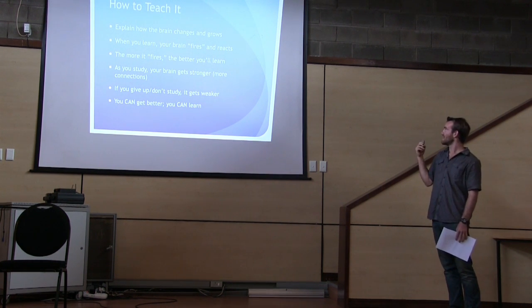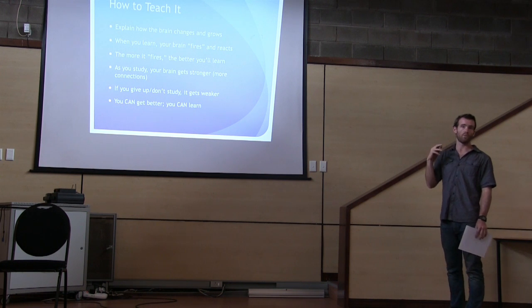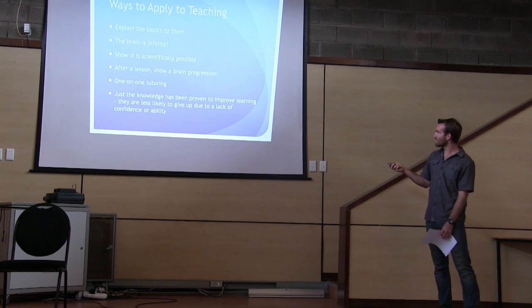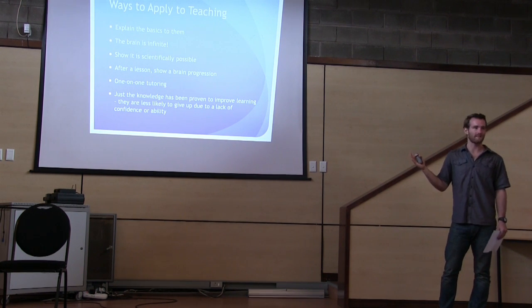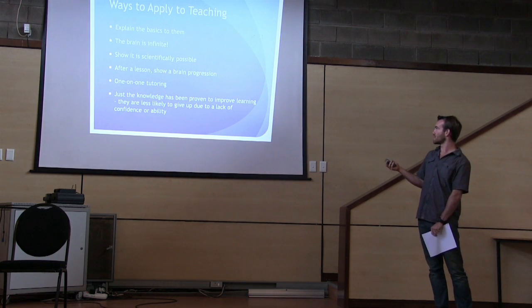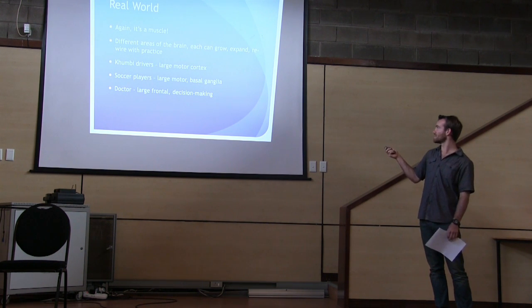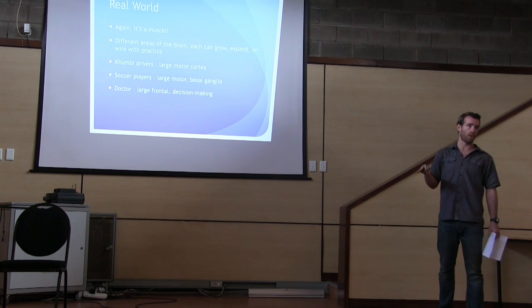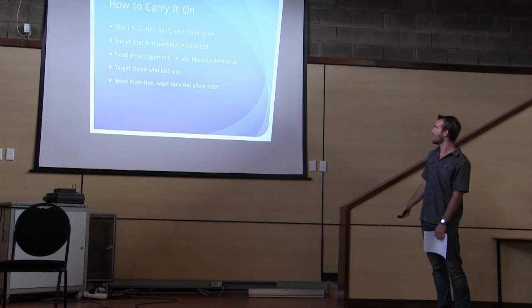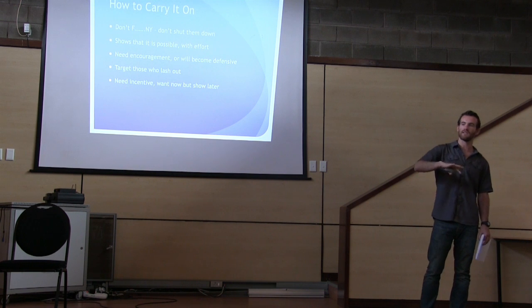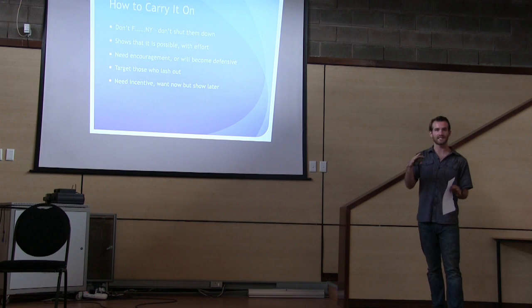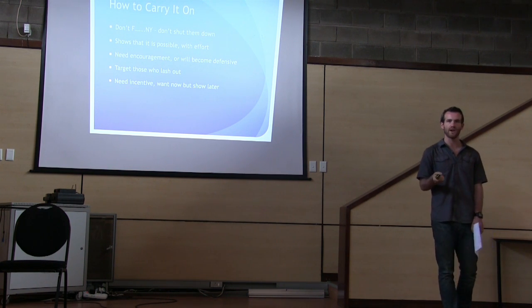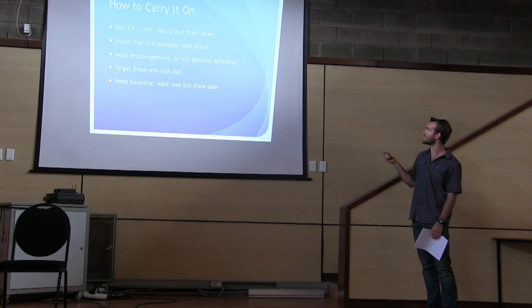How to teach this: tell them that when they learn, something fires in their brain, and the more they do it, the more it will grow — they can scientifically learn. Tell them they can do this, they can learn, it's not impossible. Show them in a lesson that the brain is infinite and has a never-ending ability to learn. You can give them one-on-one tutoring. Use real-world examples — cab drivers have a large motor cortex because they practice over and over. You can apply it to actual school skills. A big thing that has been shown to help is not failing kids: on specific assignments, they don't get A, B, C, or F — they get 'NY,' meaning 'not yet.' That shows there is potential; keep trying. Failure makes them give up and lash out. Show them that it is actually physically possible for them to learn.